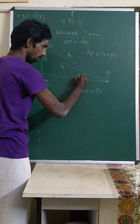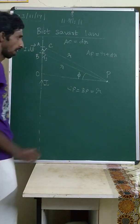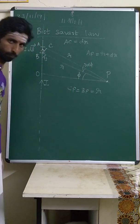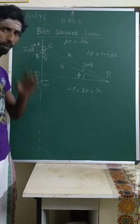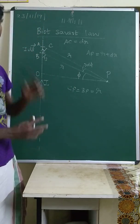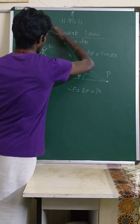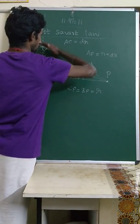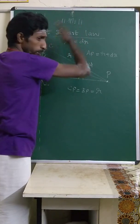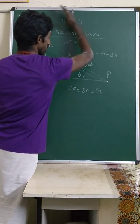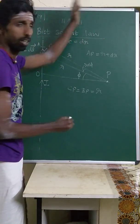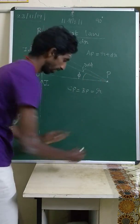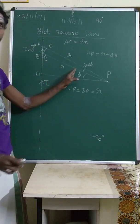This r is variable because it is making an angle. I am considering a new angle called φ, and for the small current element the small angle contributed will be dφ. This is an infinite current-carrying wire — if I increase the distance, the angle keeps on increasing, contributing to the entire magnetic field. The angle increases until at infinity it becomes 90 degrees.